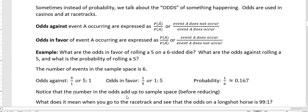Notice that the number and the odds add up to the sample space. Sometimes you reduce, and it still works out, but you don't see the sample space as clearly as you do here.